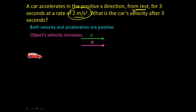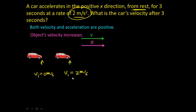Since the car begins from rest, its initial velocity — which I'll indicate as v with a subscript i — is 0 meters per second. It's not moving. Then it moves in the forward direction, and after one second the velocity goes from 0 to 2 meters per second. After one additional second, the velocity goes from 2 meters per second to v2, the velocity after 2 seconds, which is 4 meters per second.